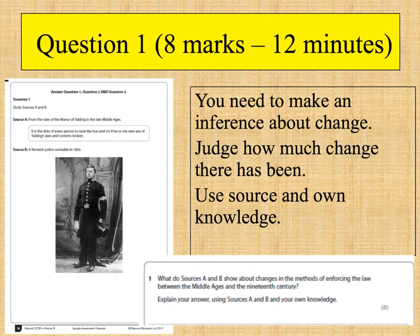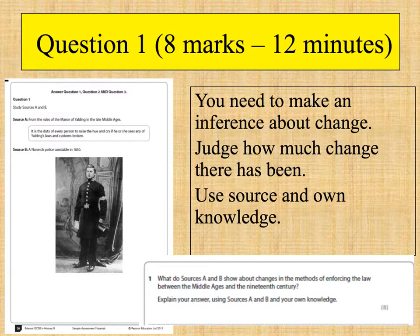Source B shows a picture of a police constable around the year 1850. For this question, you need to make an inference about change and judge how much change there has been — a lot, or only a small amount. You need to refer to the sources by quoting them, keeping quotes short and snappy. You must also use detailed own knowledge to explain the change — for example, the creation of the police in 1829 by Robert Peel to explain changes in law enforcement between the Middle Ages and the 19th century.